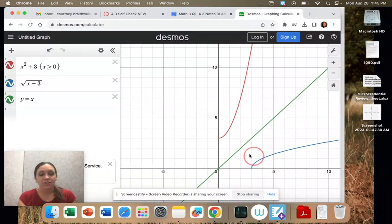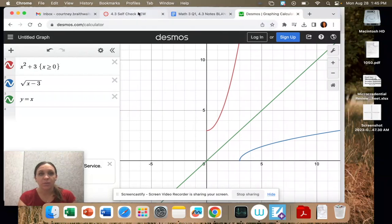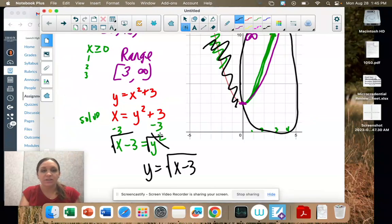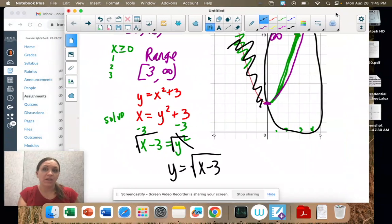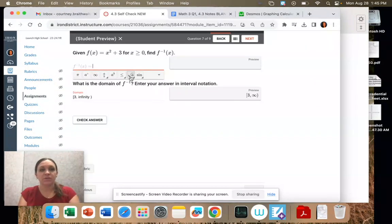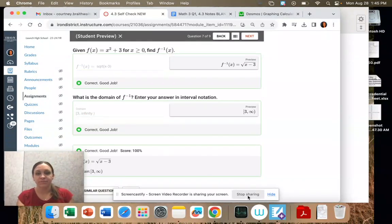And our range, nope, it's asking for domain, right? Our domain starts at x equals 3 and it goes to infinity. Just like how we figured on our last one. We already figured that out. But seeing the graph is a visual way to also find the range. So this was square root of x minus 3.